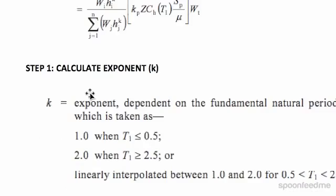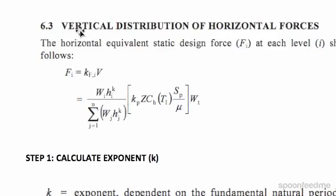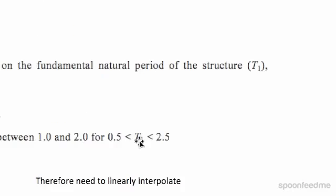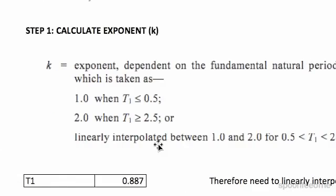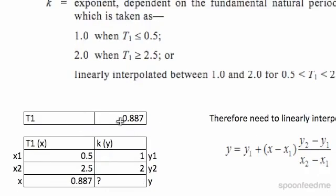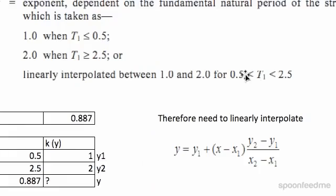Just below section 6.3, k is 1 when T1 is less than 0.5, and k is 2 when T1 is greater than or equal to 2.5. For intermediate values, we need to linearly interpolate when T1 is between 0.5 and 2.5. We found in the previous video that T1 was 0.887, so it falls in this range, which means we need to linearly interpolate.